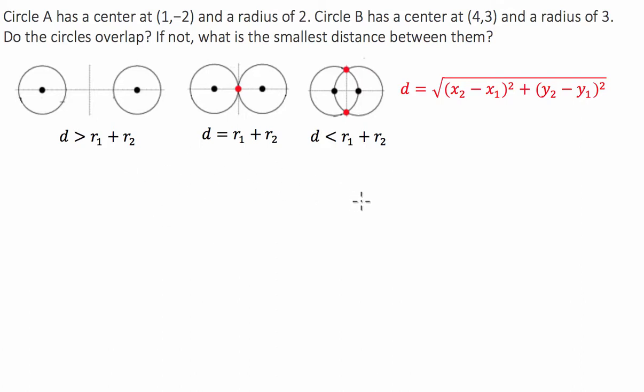G'day guys, we've got a coordinate geometry question today. We've got two circles A and B that have centers at 1, negative 2 and 4, comma 3.